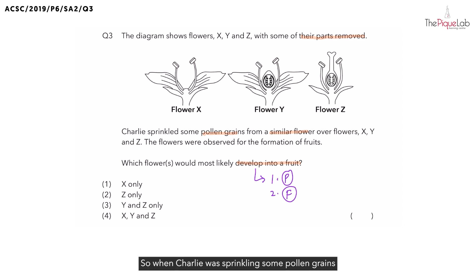So, when Charlie was sprinkling some pollen grains from flowers of the same species, what process was he trying to do? He was trying to pollinate these flowers. And what structure must be present to be able to receive these pollen grains for pollination to be successful? The stigma must be present for pollination to occur.